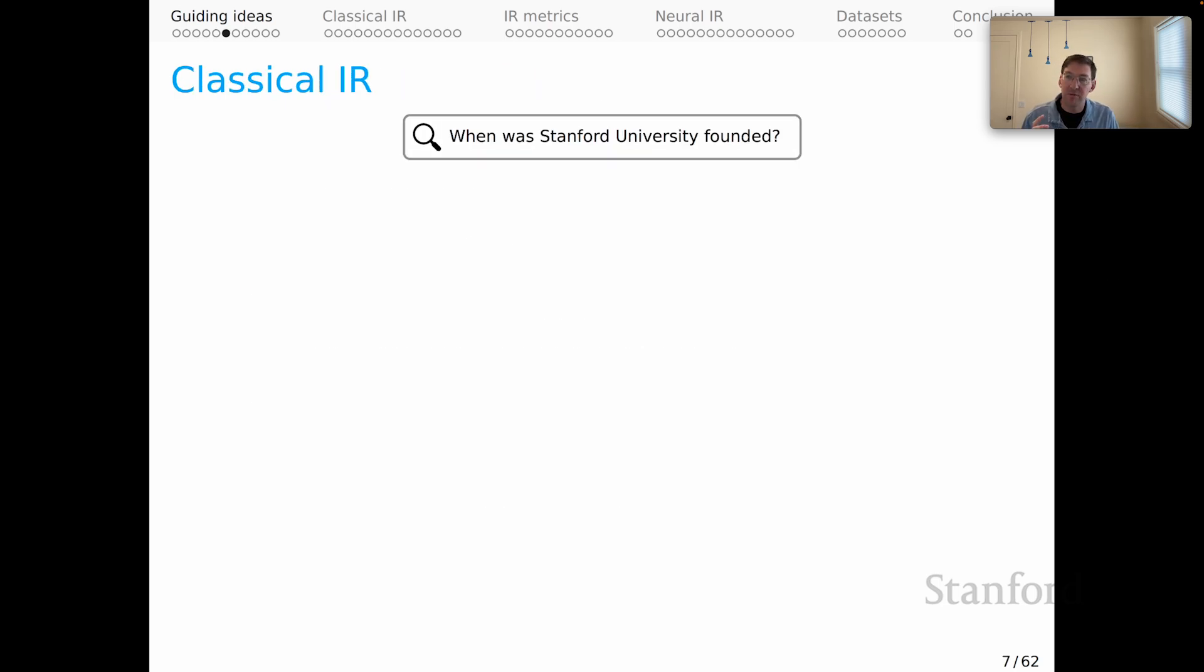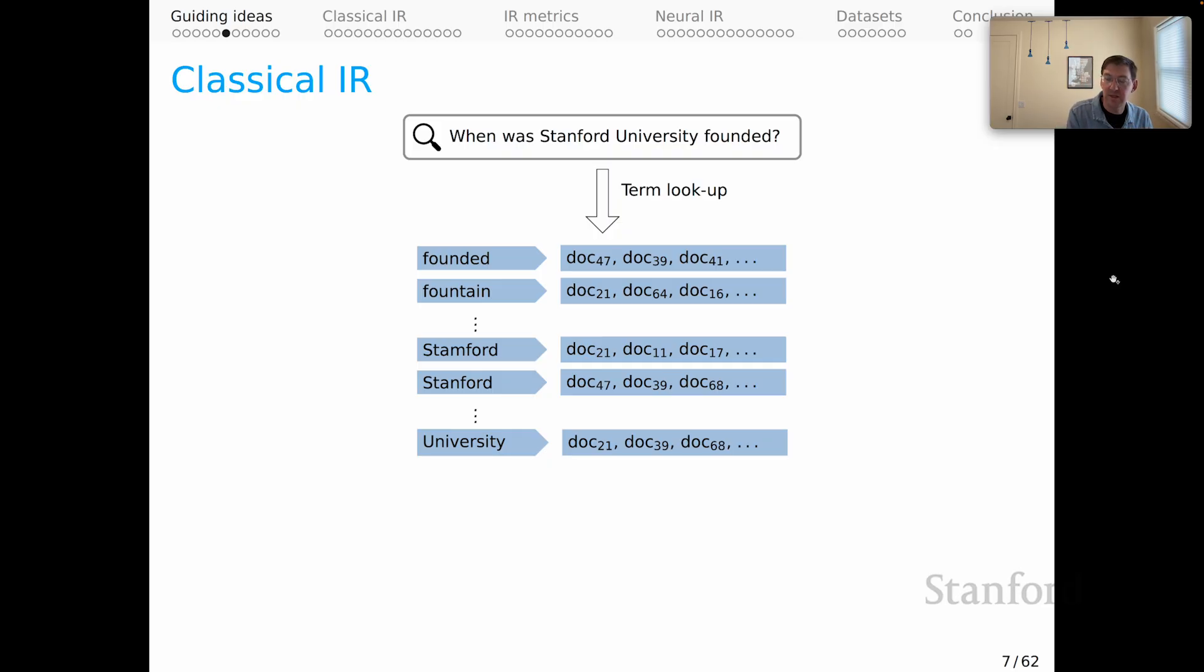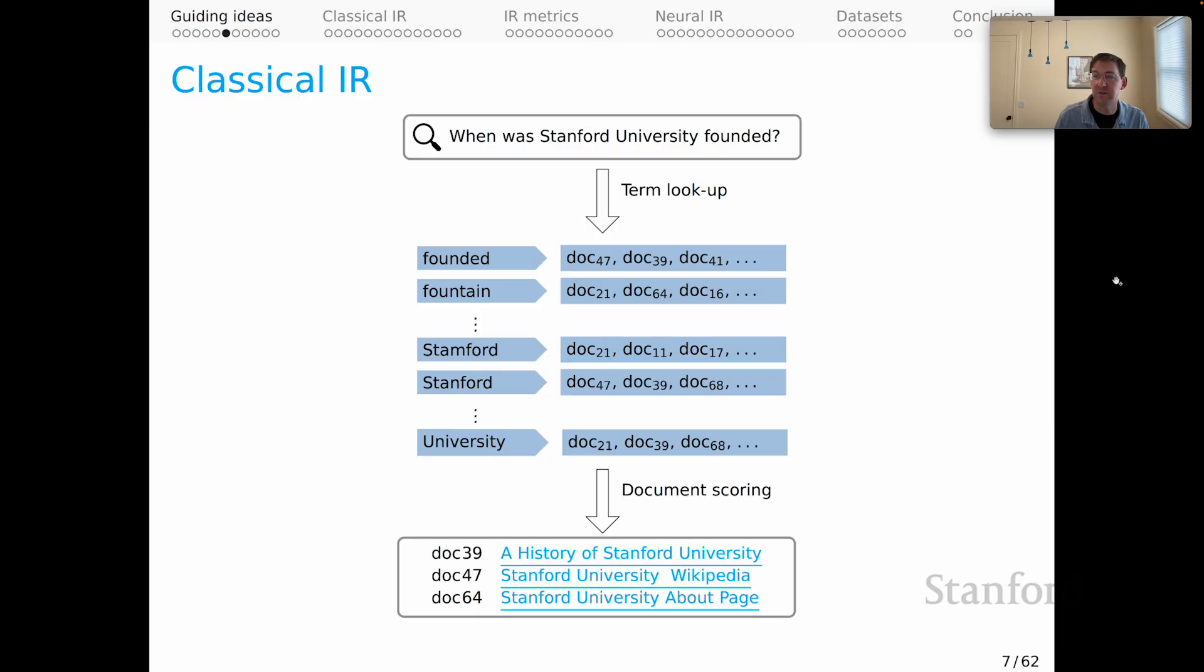Let's talk a little bit about information retrieval approaches, and I'll start with classical IR. In this case, we have a user query coming in, when was Stanford University founded? And the first thing that we do is term lookup. And so what we've done offline, presumably, is create a large index that maps terms to associated relevant documents. It could be a list of documents that contain the term, but we would probably also do some scoring of those documents with respect to these query terms to organize them by relevance. On the basis of that index, we can do document scoring and give back to the user a ranked list of documents ordered by relevance. And then it's up to the user to figure out which of those documents to check out in looking for an answer to the question. That is the classical search experience as we all know it.